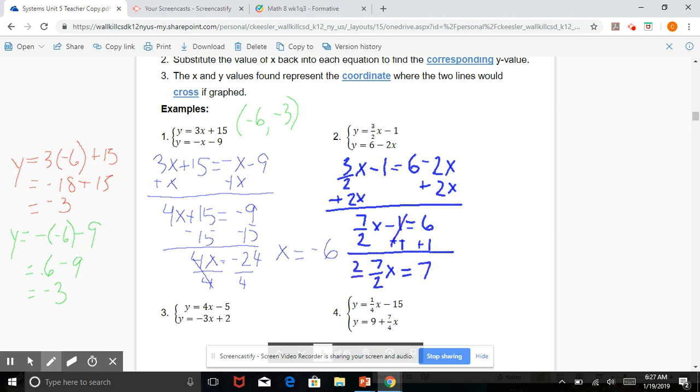So 7 over 2x equals 7. Multiply by the reciprocal, and we get x equals 7 divided by 7 is 1 times 2 is 2.